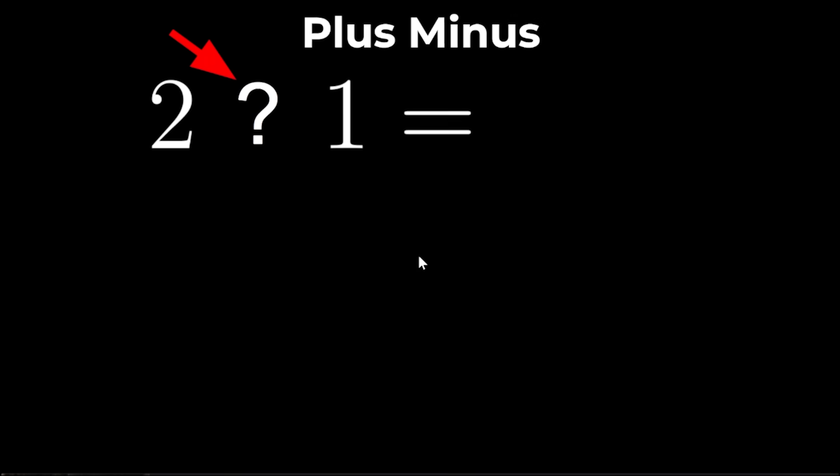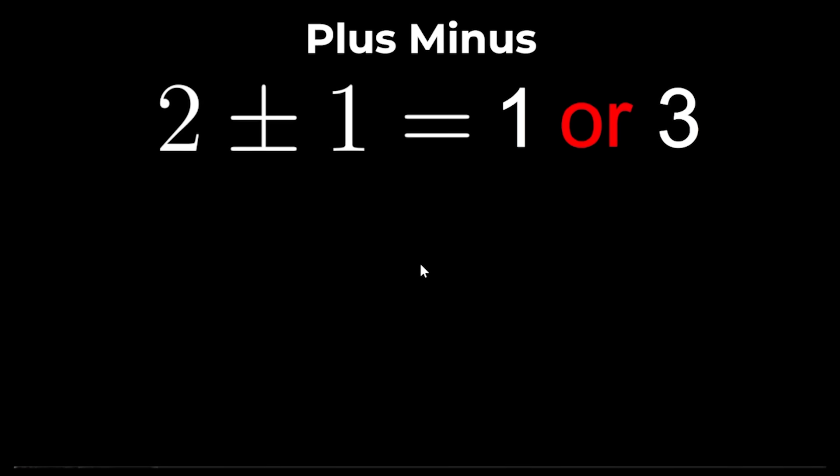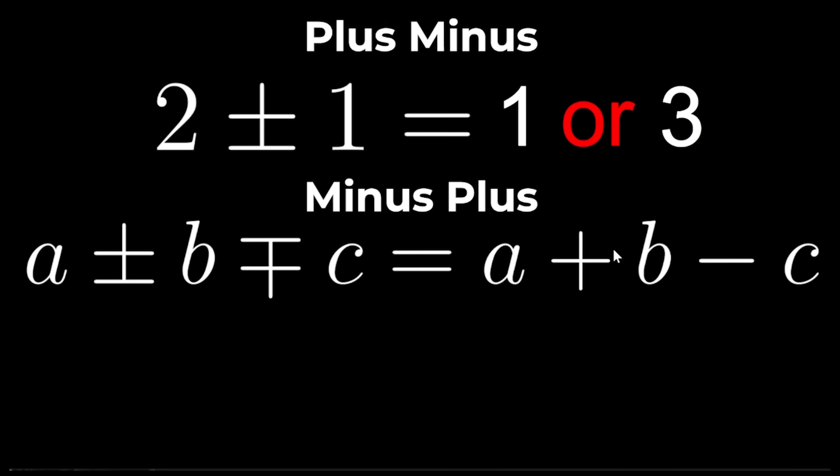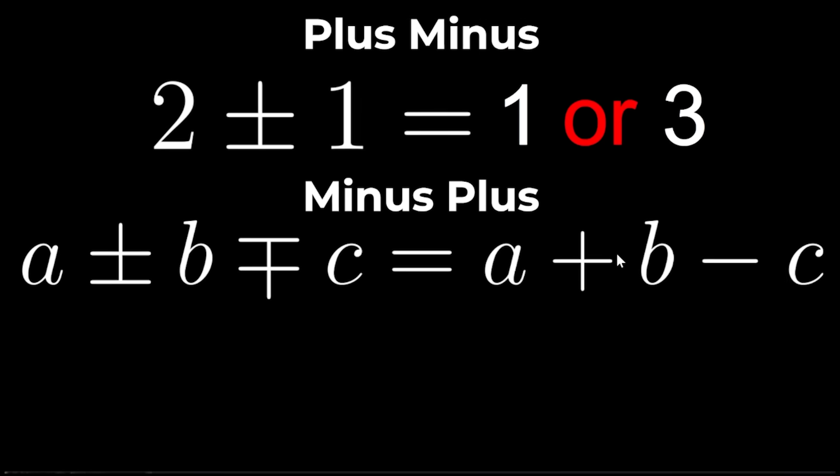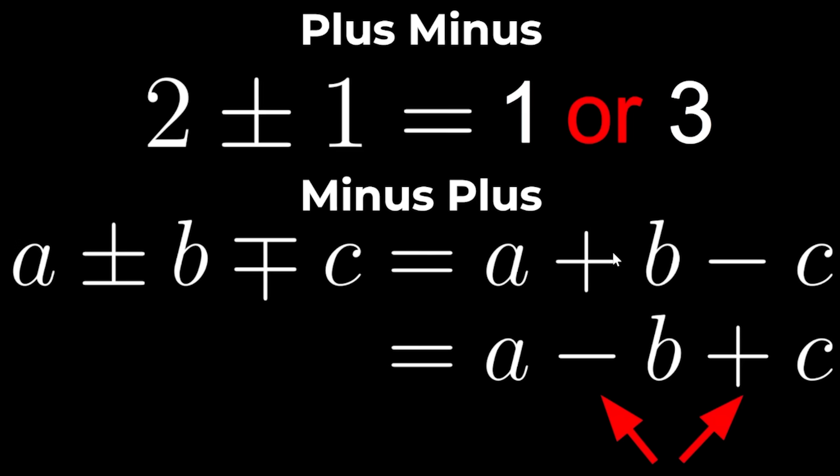Plus minus: We didn't know whether to put a plus or a minus here so we used both. 2 plus minus 1 is 1 or 3. Minus plus: A plus minus B minus plus C equals A plus B minus C, or A minus B plus C. These signs remain opposites.